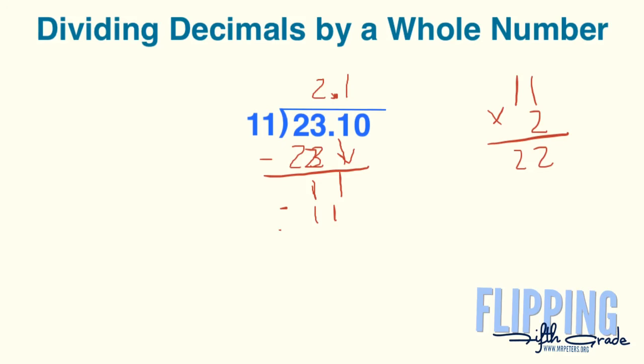Finally, we bring down our last zero. 11 goes into 0 zero times, and we get our answer of 2.10. So you can see that dividing a decimal by a whole number is really just one extra step in the long division process: make sure to bring that decimal up first.